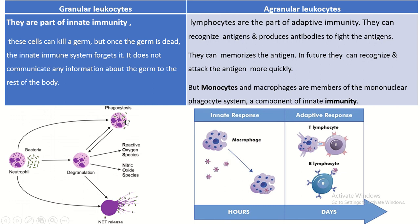The granules are liberated and attack the bacteria, and the neutrophil is also capable of phagocytosis. Lymphocytes are part of adaptive immunity — they can recognize antigens and produce antibodies to fight them. They can memorize the antigen and in future recognize and attack it more quickly. Innate immunity gives a quick initial immune response, while adaptive immunity is slow at first but faster in subsequent responses. Special note: monocytes and macrophages are members of the mononuclear phagocytic system, a component of innate immunity.